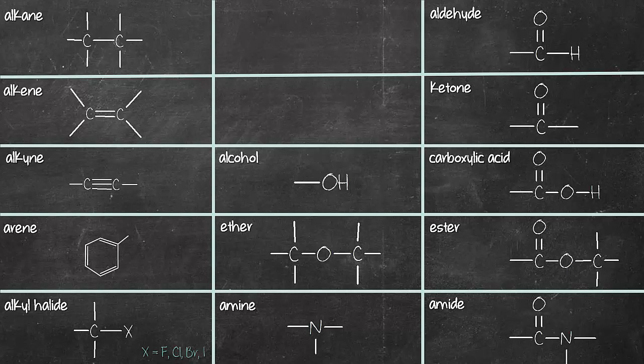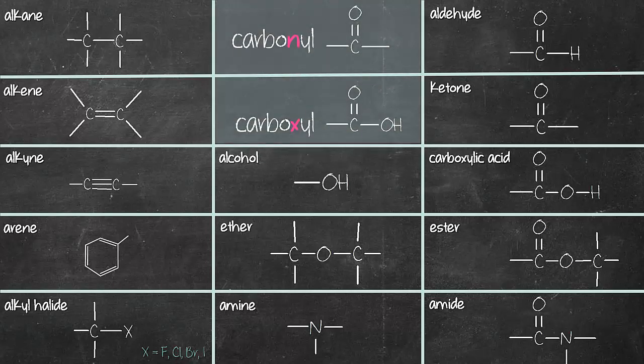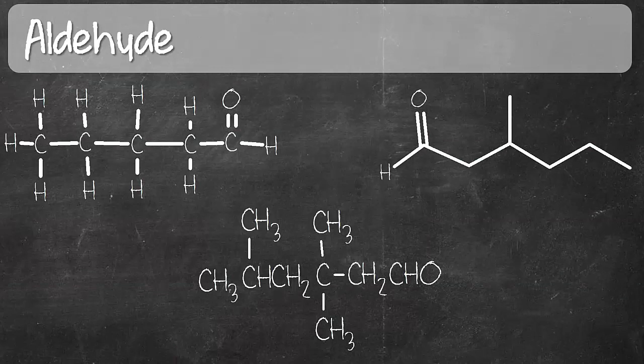A quick recap from that video: OH is called a hydroxyl group. C double bond O is called a carbonyl group. C double bond O with OH bonded together is called a carboxyl group. In this video, we are going to focus on all of the compounds on the right hand side which contains carbonyl and carboxyl. Let's start with aldehyde.